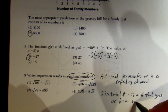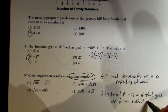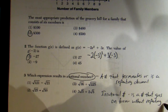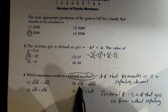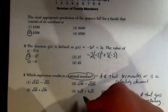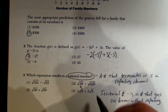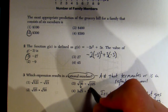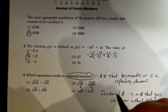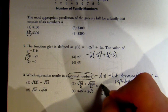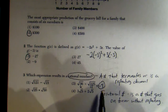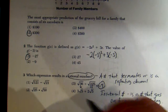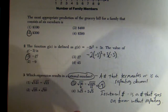The only answer that works is choice 3. We have the square root of 36, which is 6, divided by the square root of 225, which is 15. So 6 divided by 15 is 0.4. That's a number that terminates — it stops at 0.4 — so that is a rational number. Choice 3.